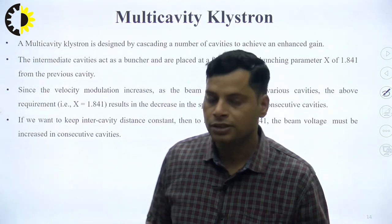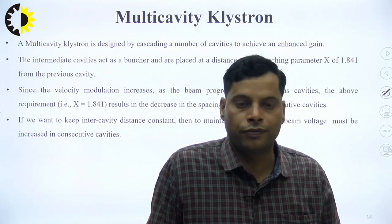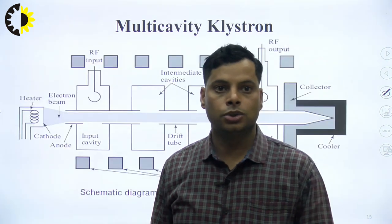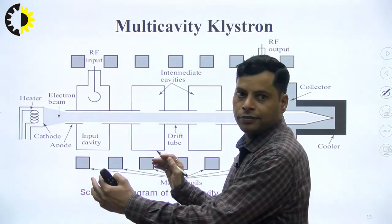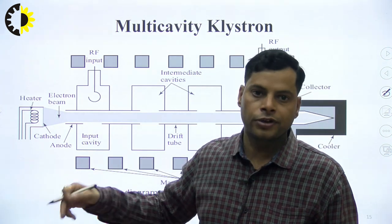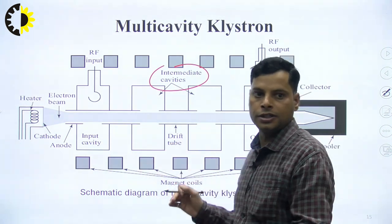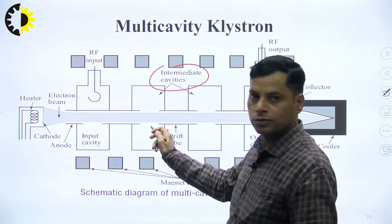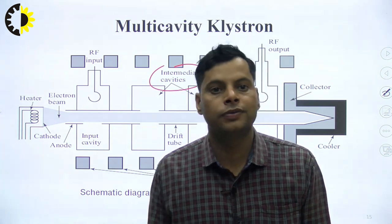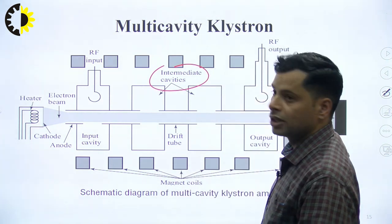After that, the issue is that we are not able to get sufficient gain from the two-cavity klystron. To achieve a higher gain range of 10 to 50 dB, we use the multi-cavity klystron amplifier. In this, intermediate cavities are added between the input buncher cavity — where the RF input is provided — and the catcher cavity — where the RF output is taken. The number of cavities are connected in cascaded form, meaning the output of one is the input of the next, following the concept of cascading. This arrangement gives the structure of the multi-cavity klystron amplifier, and with it we are able to get gain above 20 dB for any klystron tube or microwave source.